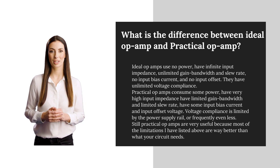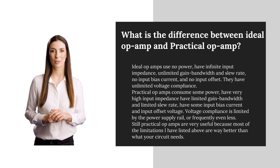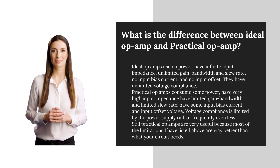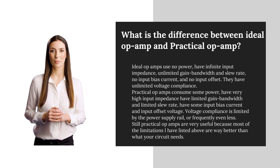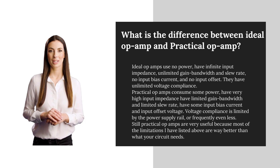Practical op-amps consume some power, have very high input impedance, limited gain bandwidth and limited slew rate, some input bias current and input offset voltage. Voltage compliance is limited by the power supply rail, or frequently even less.